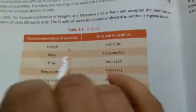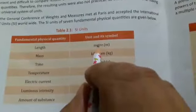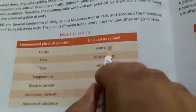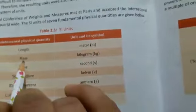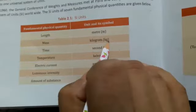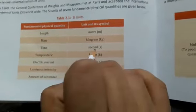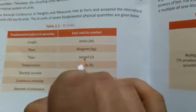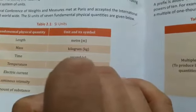The SI units of seven fundamental physical quantities are given below. This table represents the fundamental quantities like length. Length is measured in meter, and in symbolic form it is written in SI unit as M. Mass: kilogram, SI unit is kg. Time: second, SI unit symbol is S.